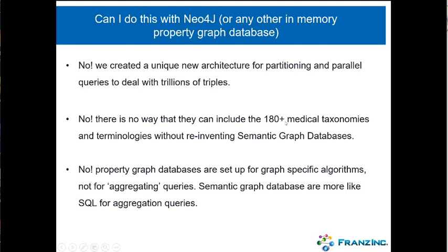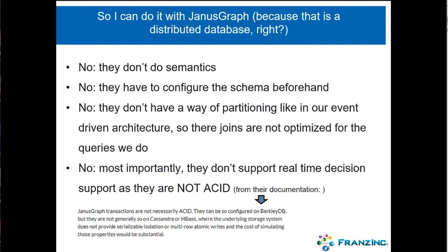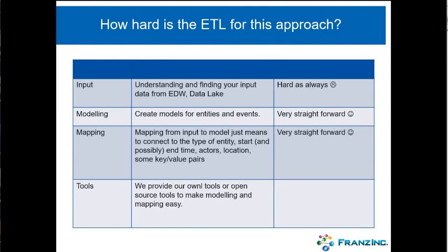Our system is also used for real-time decision support, where you literally want to do queries and instantly get a result in milliseconds. If you work with a big distributed store, sometimes it just takes a second to set up the job structure for a Spark query. These graph databases are great for certain types of analytics but not for real-time decision support.